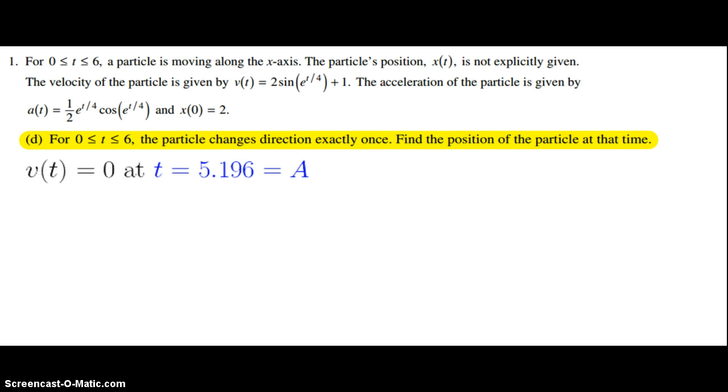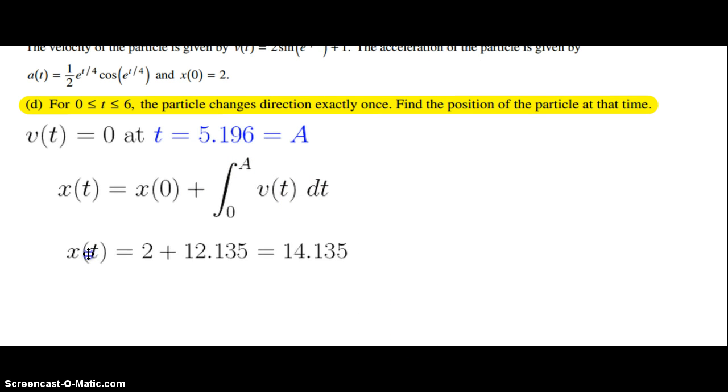Going back to our position equation from the first slide, x(t) = x(0) plus the integral of v(t) dt from 0 to A. This is the change in position from time equals 0 to time equals 5.196.